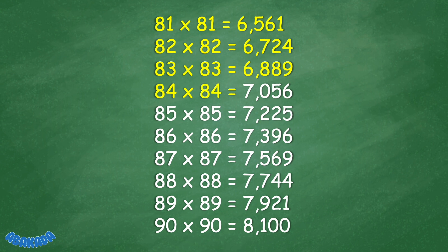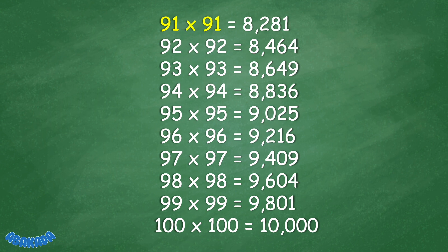85 times 85 equals 7,225. 86 times 86 equals 7,396. 87 times 87 equals 7,569. 88 times 88 equals 7,744. 89 times 89 equals 7,921. 90 times 90 equals 8,100. 91 times 91 equals 8,281.